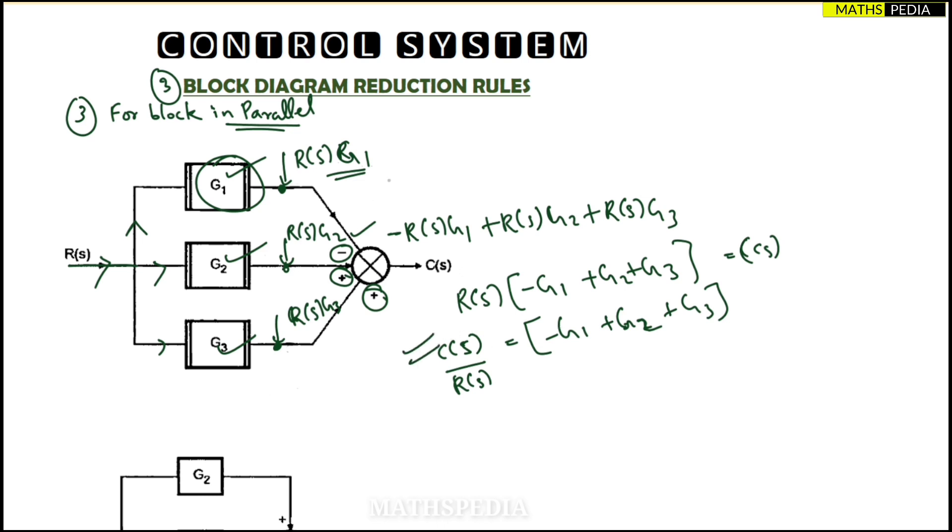So that means what is happening here: basically, these three blocks are not in series, they are in parallel because here one summing point has come. So the summing point is adding those three signals. So I can say that when the blocks are in parallel, you have to just add them.